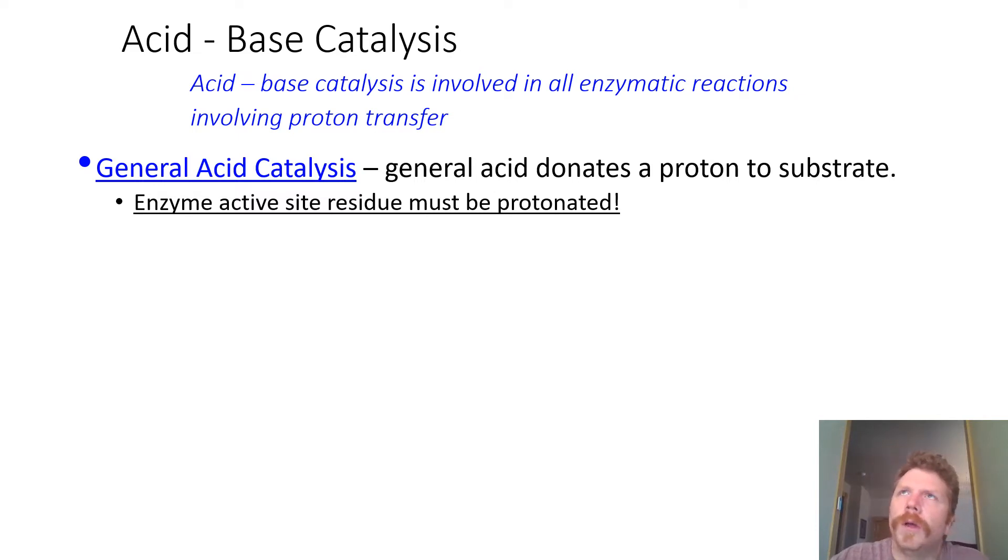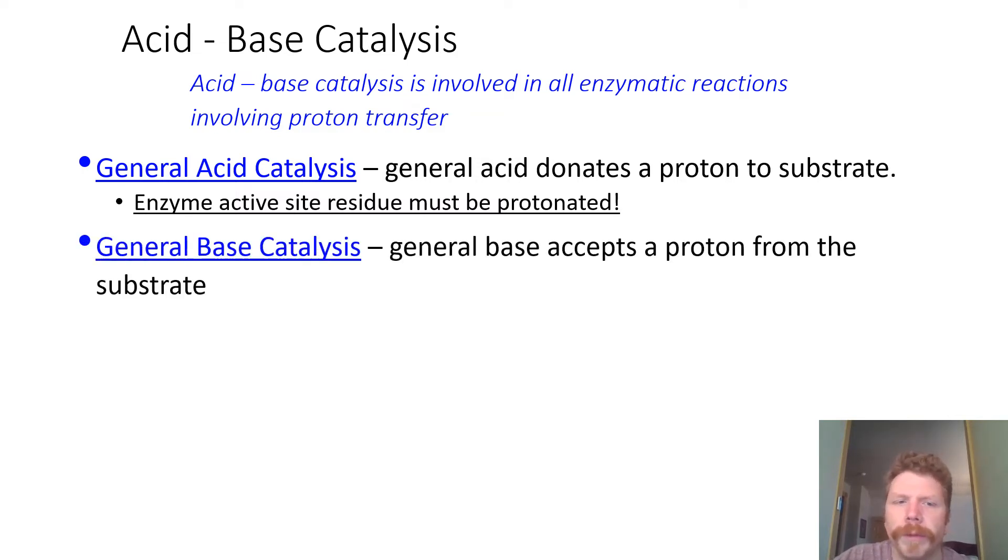So then what you should be thinking is what are good candidates? Well, some really good candidates would be something like an arginine or a lysine because those both have pKa values that are fairly high. Histidine might also be good because histidine's pKa is about 6. And at a physiological pH, it's entirely possible that it will be protonated.